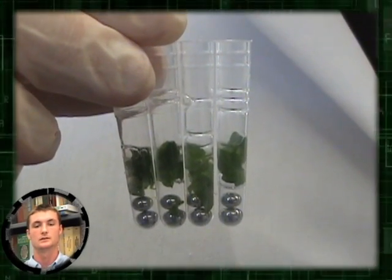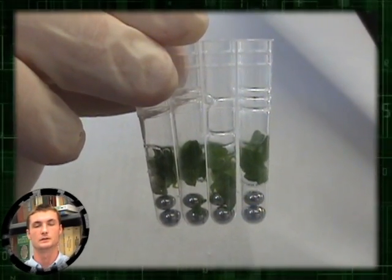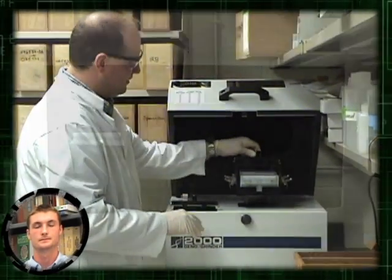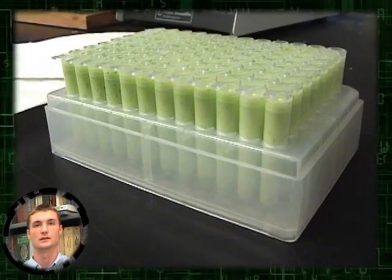Metal balls are added to tubes to help break up the plant material and an extraction buffer containing detergent is added. Racks with 96 samples are agitated to grind the tissue.